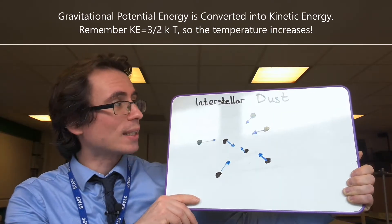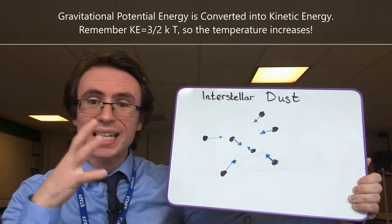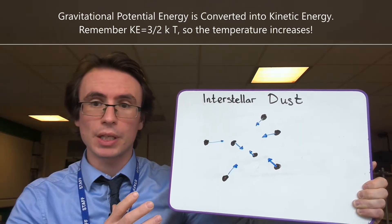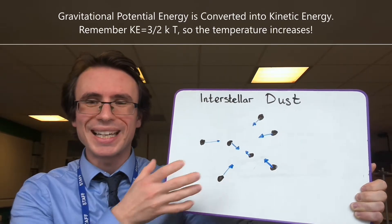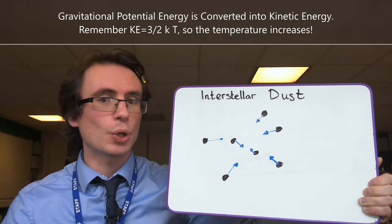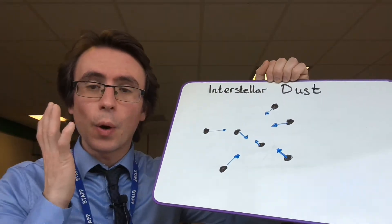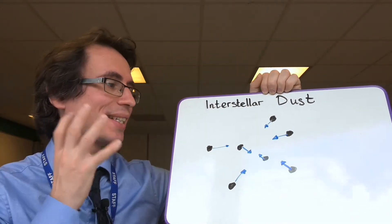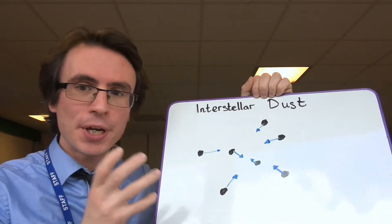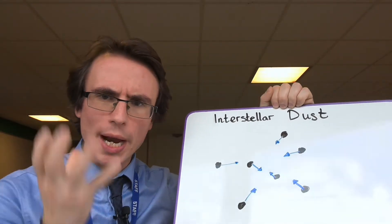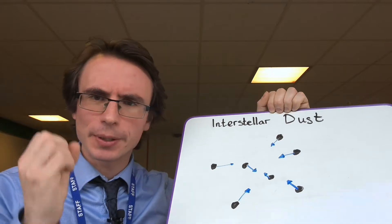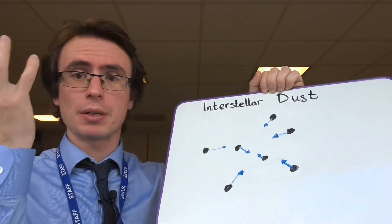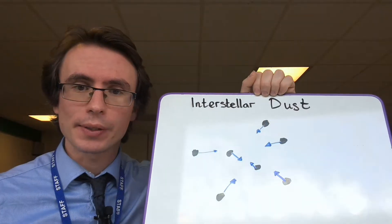As this interstellar dust cloud is experiencing a gravitational collapse, its temperature is rising. As this interstellar cloud is collapsing further and further, the temperature is rising faster and faster, and continuously increasing.